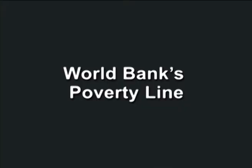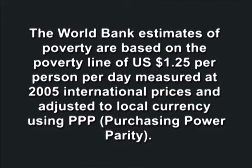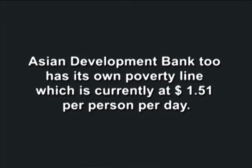Let us talk about the World Bank's poverty line. The approach of poverty estimation by the World Bank is similar to that employed in India and most developing countries. The World Bank estimates of poverty are based on a poverty line of 1.25 US dollars per person per day measured at 2005 international prices and adjusted to local currency using purchasing power parity. The Asian Development Bank also has its own poverty line, currently at 1.51 US dollars per person per day.